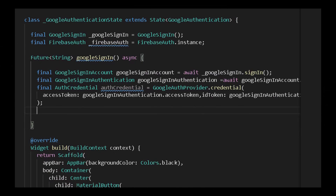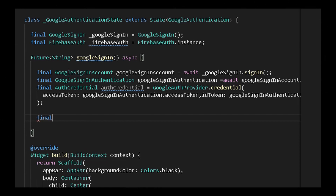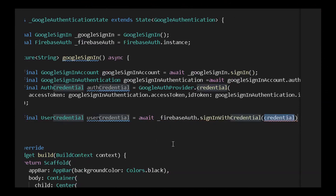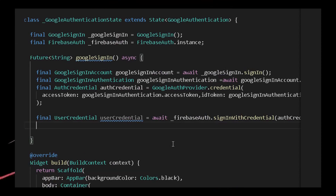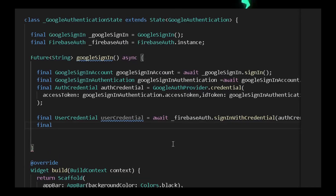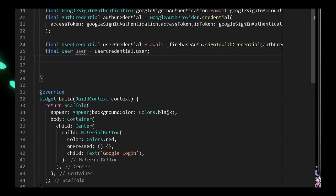Now we need to sign the user into Firebase. Write: final UserCredential userCredential = await _auth.signInWithCredential(authCredential). This method takes the auth credentials we prepared. Then extract the user: User? user = userCredential.user. The user class comes from the firebase_auth dependency. Up until this point the user is signed in with Google but not yet with Firebase — this step connects both.